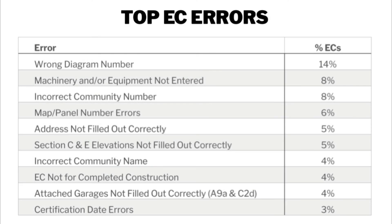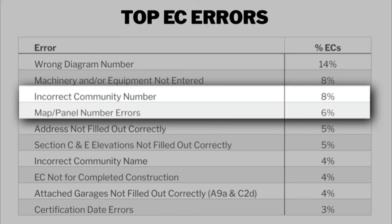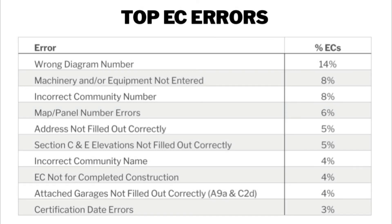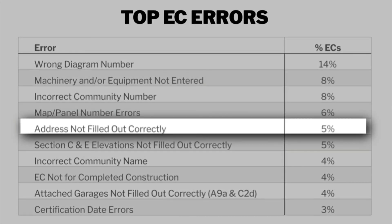The next two errors — incorrect community number and wrong map panel numbers — are easily fixable. Since these fields are both information retrieved from the FIRM, using the memo of correction works easily. You could also fix them by filling out Section G and providing the correct information in your comment. The error of address not filled out correctly usually means the address is missing or slightly different from page 1. Check if the certifier can change it; if not, write a comment in Section G explaining the correct address and that it should appear at the top of each page.